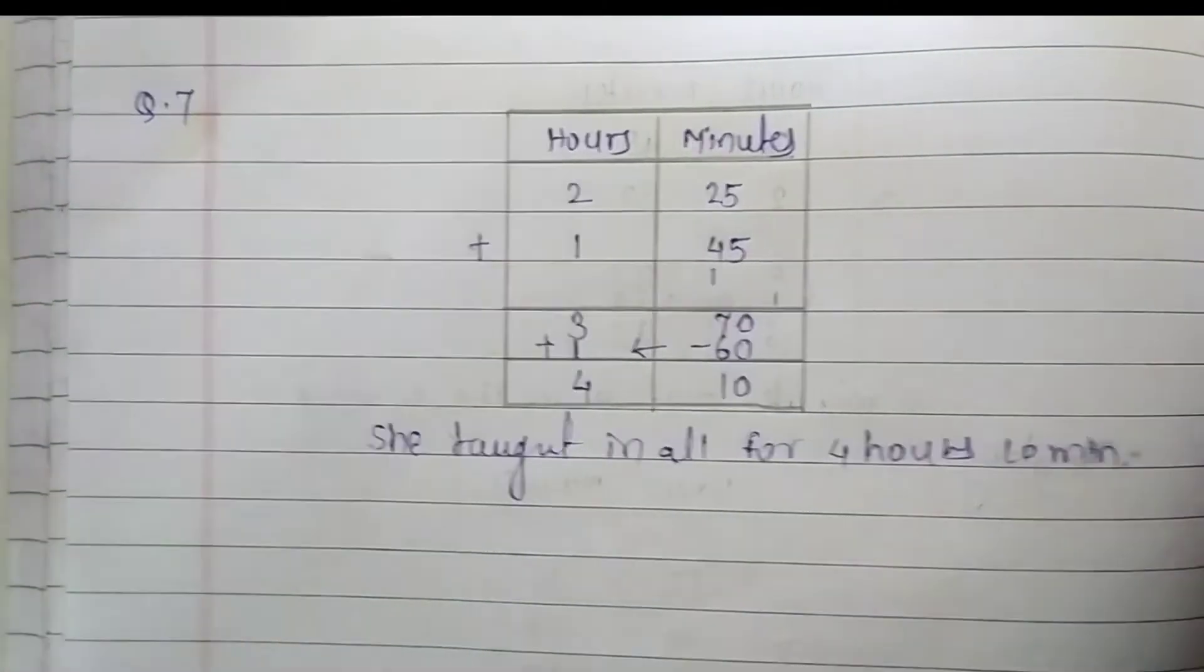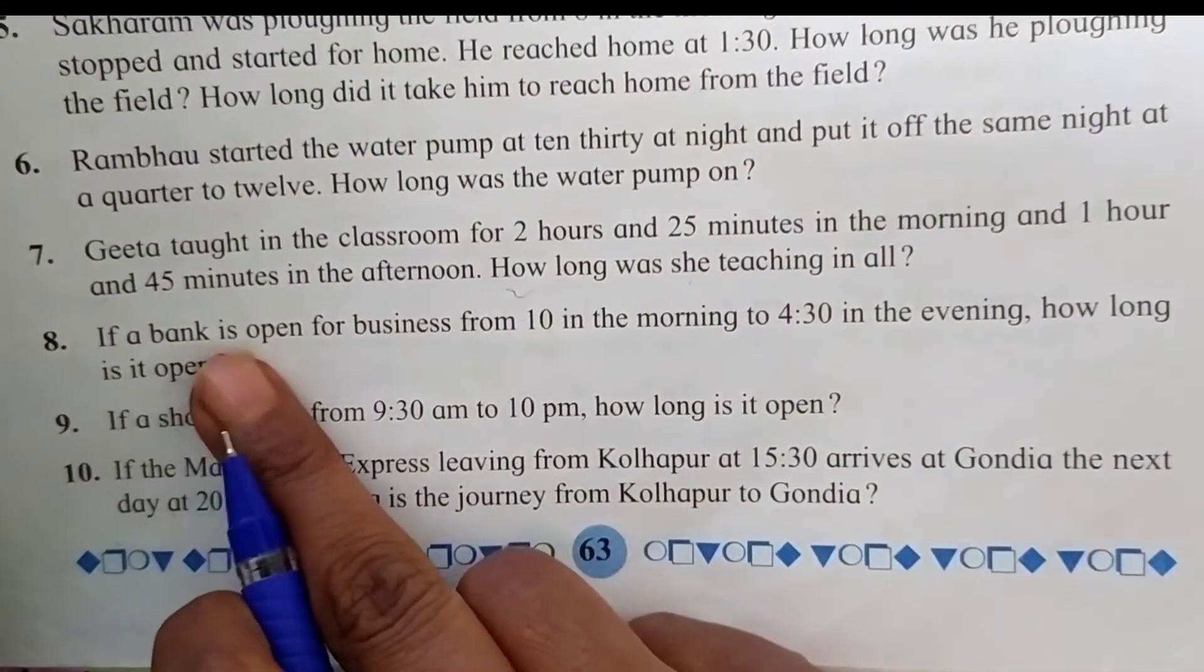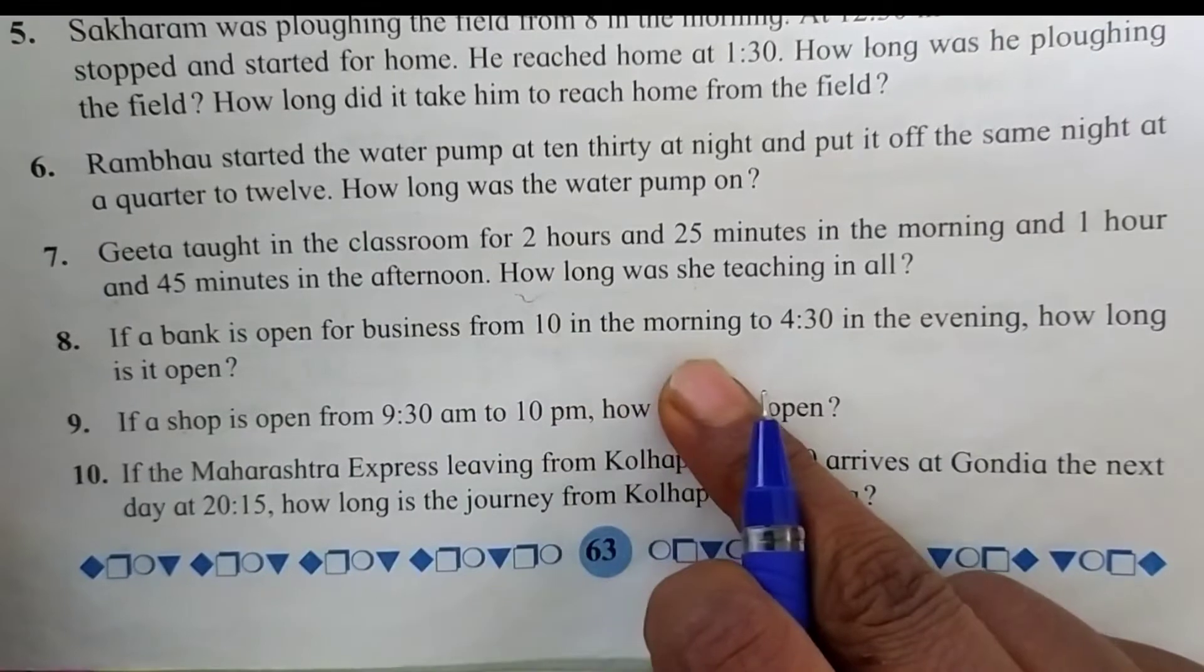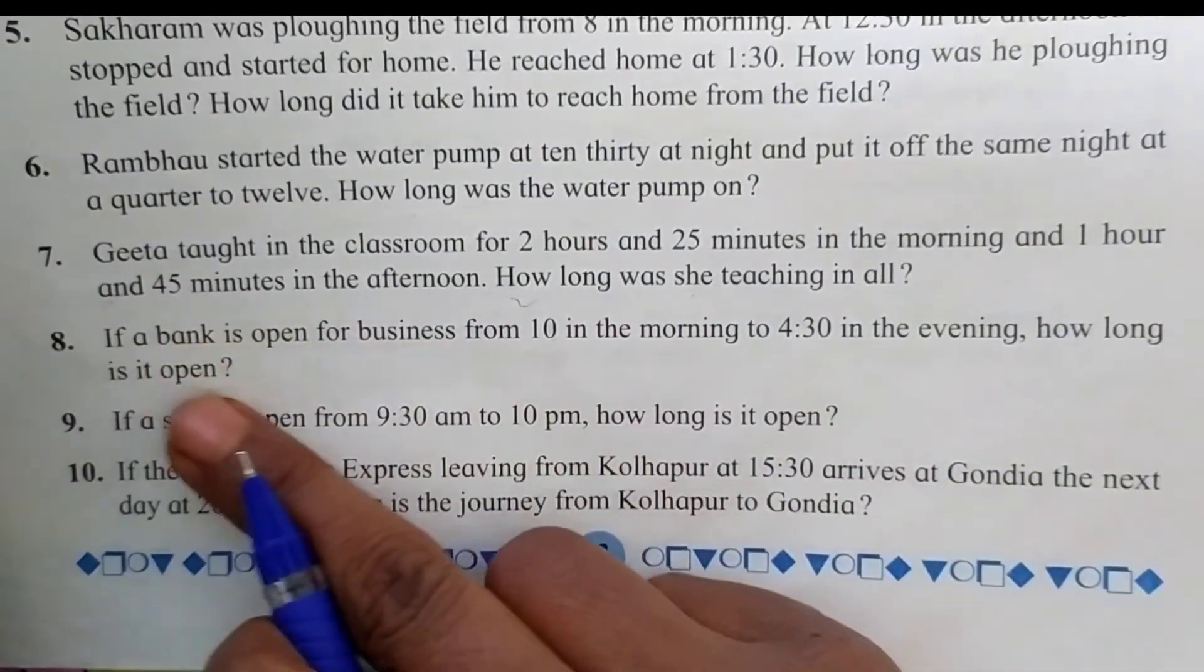Now 8th question. The question is: if a bank is open for business from 10 in the morning to 4:30 in the evening, how long is it open? Let's find here the time.